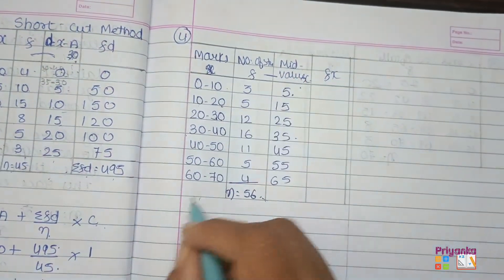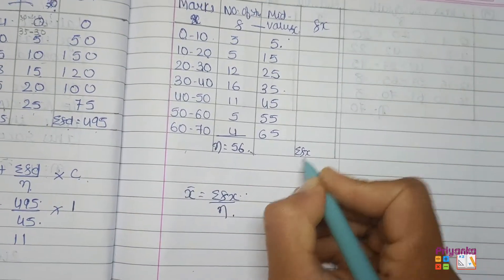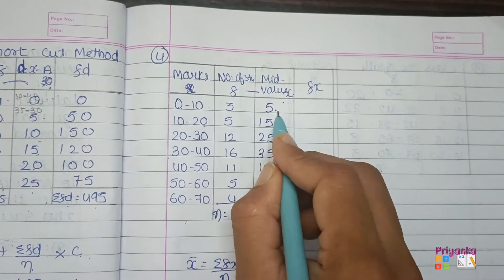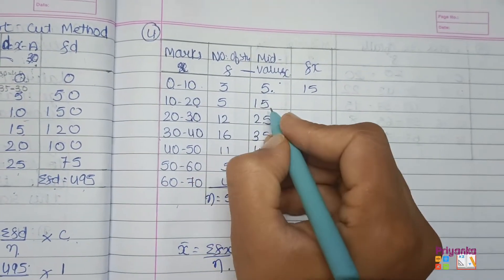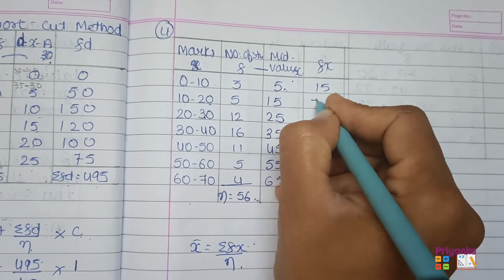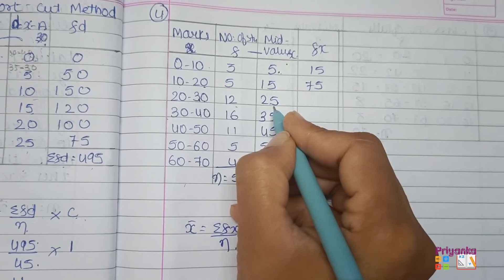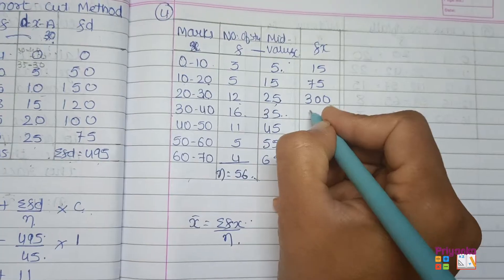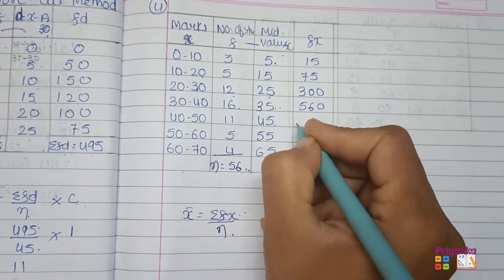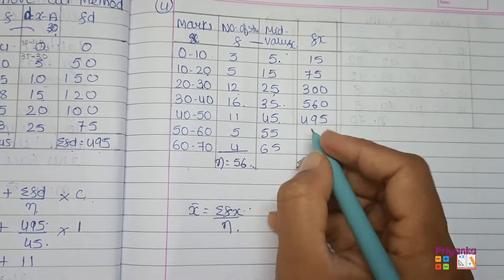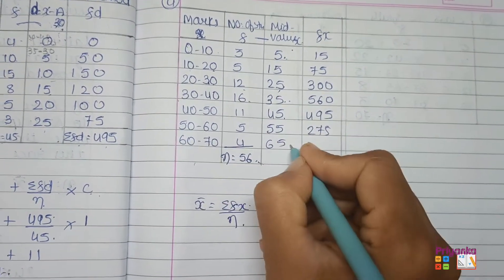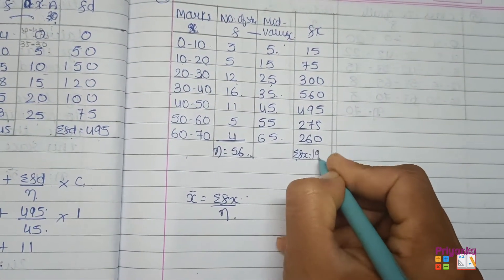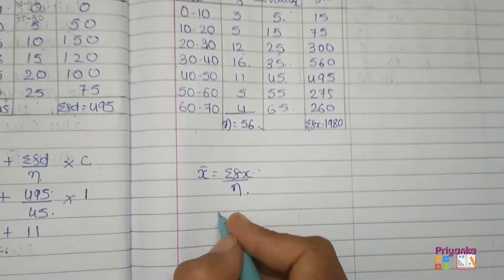At the end we will get the total of the fx column, which is denoted as σfx. So multiply: 3 × 5 = 15, 5 × 15 = 75, 12 × 25 = 300, 16 × 35 = 560, 11 × 45 = 495, 5 × 55 = 275, 4 × 65 = 260. The total of this column is 1960.